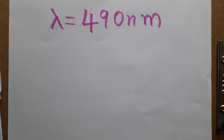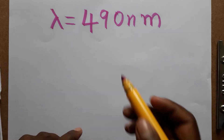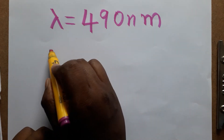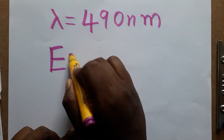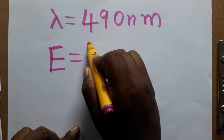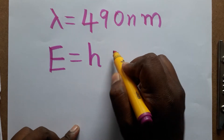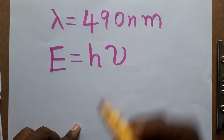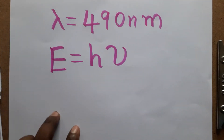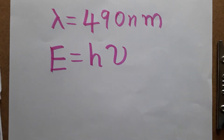According to the energy equation, energy E is equal to Planck's constant times frequency. So energy is equal to Planck's constant times frequency.